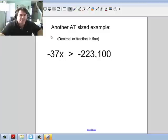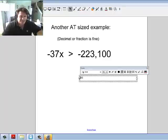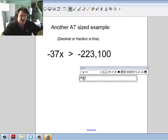Next page. Another AT size example. So you go ahead. -37x is greater than -223,100. You go ahead. While I do it here, let's see. I get 6029.72. Did you get it as well? I bet I got it first. Maybe not. Either way, that's the answer I get. And you would have x is less than that.